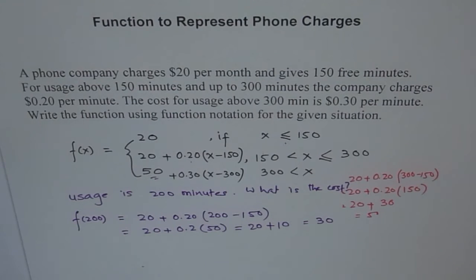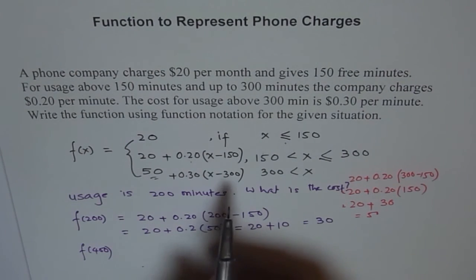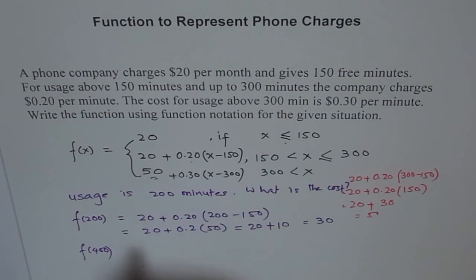Which you are going to pay, or the company is going to charge, for the usage of 200 minutes. Now, if I ask, what is the usage for 400 minutes, is it double of this? No, it is not, we just can't double it. We have to use this piece of the function.